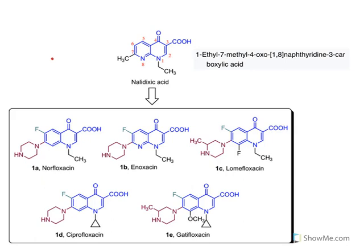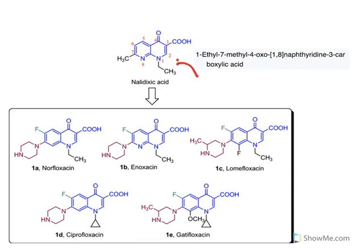It all started with nalidixic acid. The first known quinolone drug is nalidixic acid. Chemically, it has a ring known as naphthyridine. At first and eighth positions, two nitrogens are present — hence it is known as 1,8-naphthyridine. It has an ethyl group, a methyl group, and an oxo group present as substitutions.